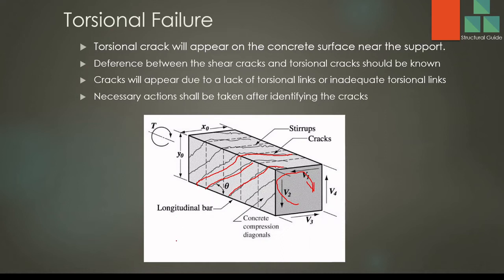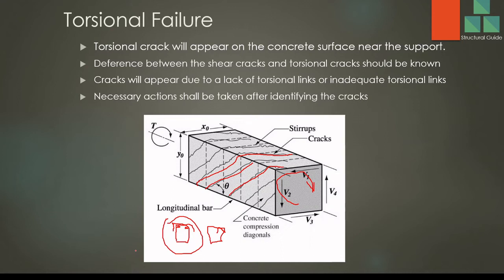What we want to say here is that a torsional link is not the same as a shear link. For a shear link, we bend at one edge, but for a torsional link, we bend at both edges. You can see the reinforcement here — one end of the link is on one side and the other end is on the other side. In the normal shear link, we bend at only one edge. So we have to provide the torsional link in situations where torsion is present; otherwise there could be an issue.